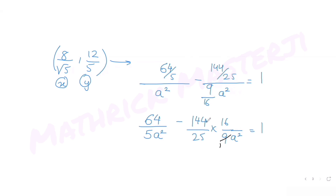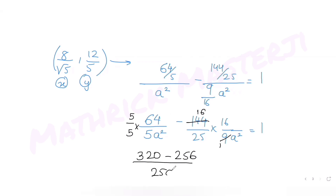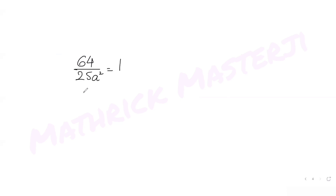Making the denominator the same by multiplying: (64 × 5 - 256) / (25a²) = 1, giving (320 - 256)/(25a²) = 1. So 64/(25a²) = 1, which means 25a² = 64, therefore a² = 64/25.